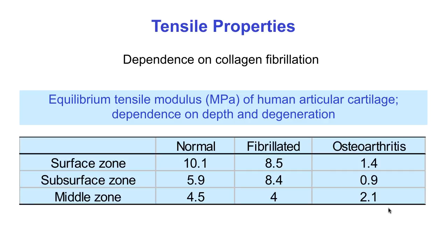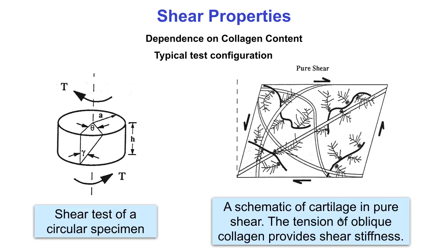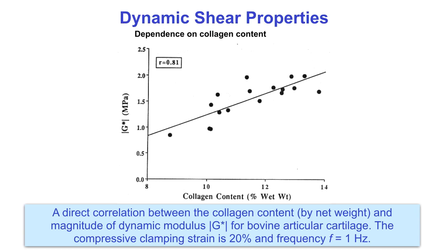The collagen matrix degradation that occurs in osteoarthritis greatly impairs the elastic stiffness of cartilage tissue. Cartilage can be tested in shear by twisting a cylindrical core sample. The shear properties are primarily attributable to tension in obliquely aligned collagen fibers. Low friction makes shear stress and strains low in healthy cartilage, but it can be higher in diseased cartilage. Shear testing can also be done dynamically by applying an oscillating twist to the specimen, and a complex shear modulus can be measured. Its magnitude, the dynamic shear modulus, increases with the collagen content.